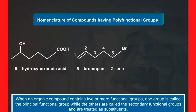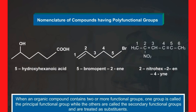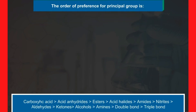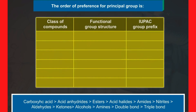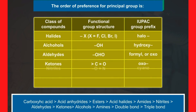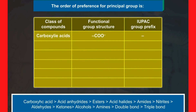When an organic compound contains two or more functional groups, one group is called the principal functional group while the others are called the secondary functional groups and are treated as substituents. The order of preference for the principal group is as given. When the functional groups act as substituents, they are named as per the given table.